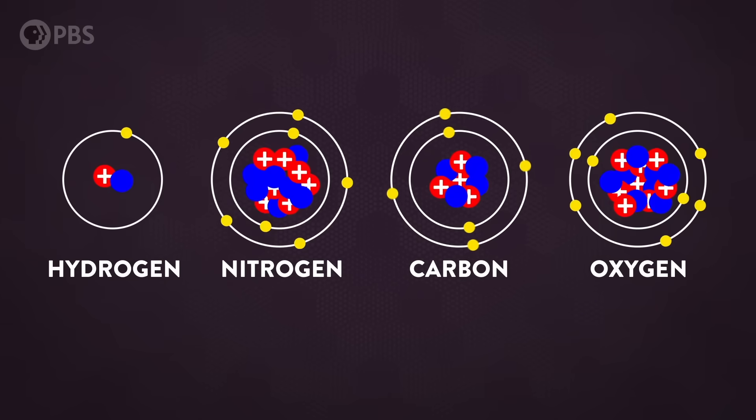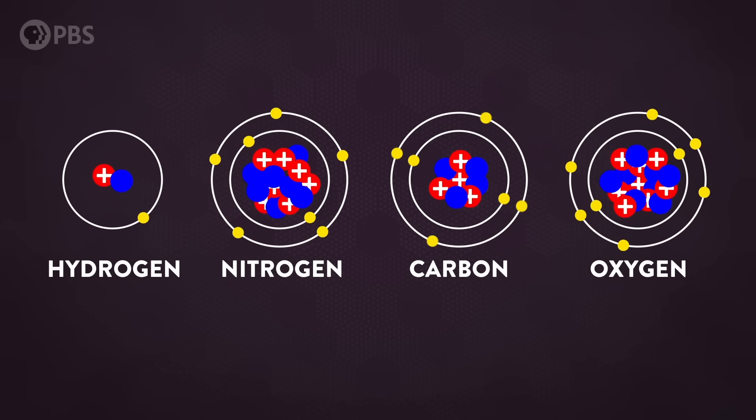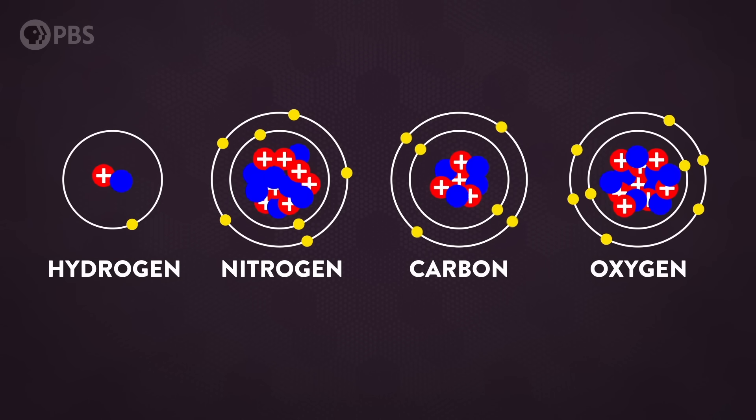The electrons of different elements reside in unique structures of energy levels. So you can tell what element you're looking at just based on the colors it emits when it's heated.